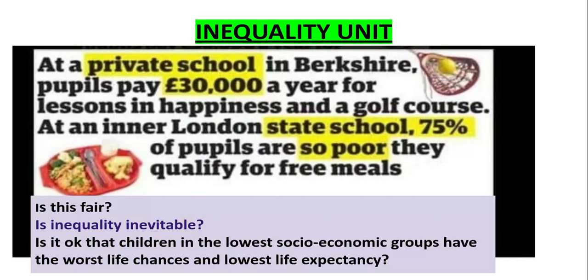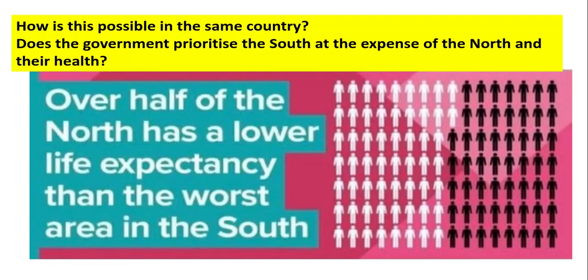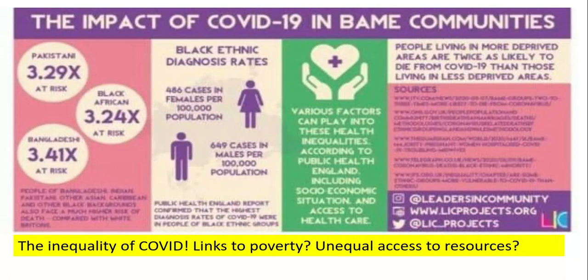Finally, the inequality unit looks at whether inequality is inevitable. We look at whether those in the lowest socioeconomic groups with the worst life chances and lowest life expectancies — is that normal, and is it OK for it to be that way? We look at the difference between the North and South of the UK and why over half of the North has a lower life expectancy than the worst areas in the South. We also look at very topical issues, such as the inequality of COVID — does it link to poverty, and why do black and ethnic minority communities tend to be three times more likely to get COVID? Is it because they have unequal access to resources like healthcare and vaccinations?